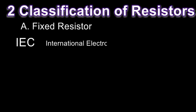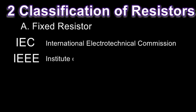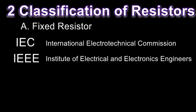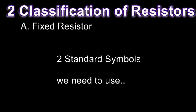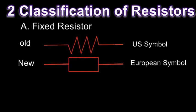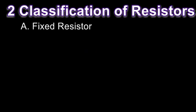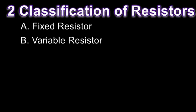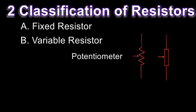Now let's go back to fixed resistors. According to the IEC — International Electrotechnical Commission — and the Institute of Electrical and Electronics Engineers, there are two standard symbols used to identify a resistor: the first is the old one used by the US, and the other is the new one used by European standards. Either of these two can be used. Another symbol we have is for variable resistors, such as the potentiometer or volume control.